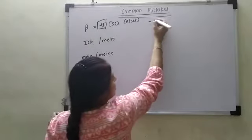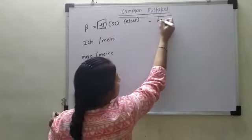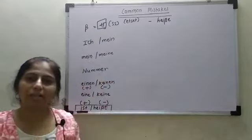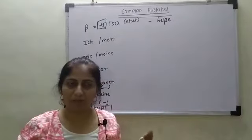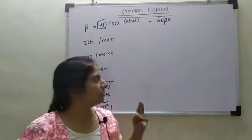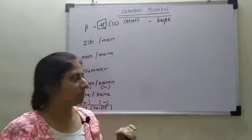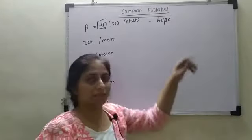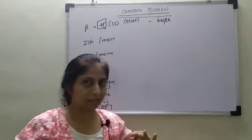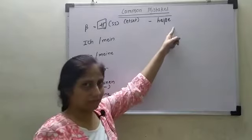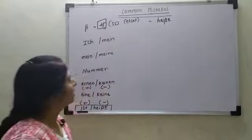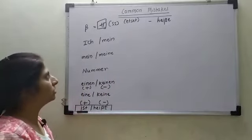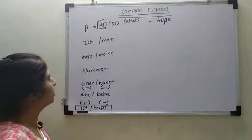So it is 'Ich heiße.' It is not 'Ich haibe' or 'haiba' or something like that — it is 'Ich heiße.' What is the correct pronunciation? 'Heiße.' This is the most common mistake I found in your videos.